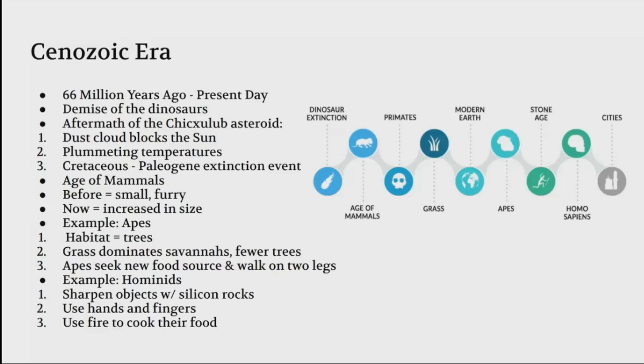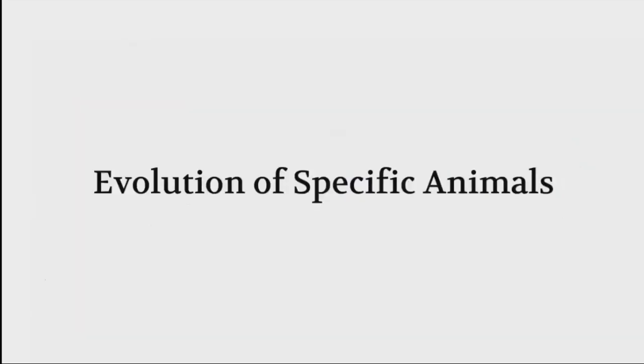A second example is the hominids, where we descend from. They sharpen objects with silicon rocks and learn to use hands and fingers and use fire to cook their food. That's how they evolved over time into us today.